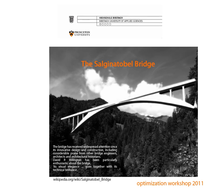The Salginatobel Bridge is a reinforced concrete arch bridge designed by renowned Swiss civil engineer Robert Maillart. It was constructed across an alpine valley in Grisons, Switzerland between 1929 and 1930. In 1991, it was declared an international historic civil engineering landmark.